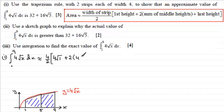Then it's plus the last height. So the last height is when x equals 9, so you're going to have y equaling 4√9. Well root of 9 is 3 and 4 times 3 is 12, but again I'm just putting that in like that to show the working.